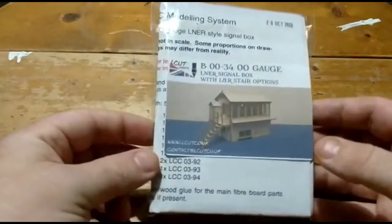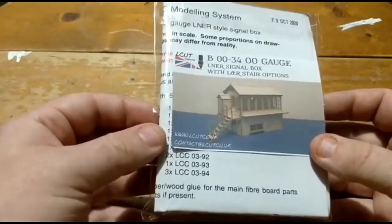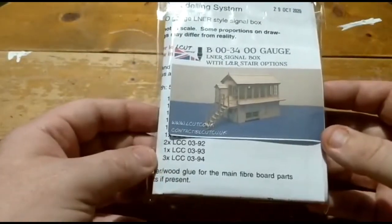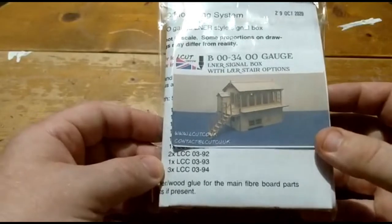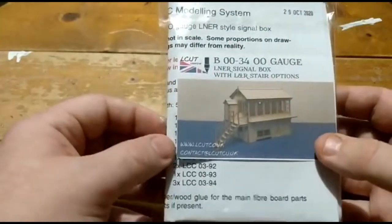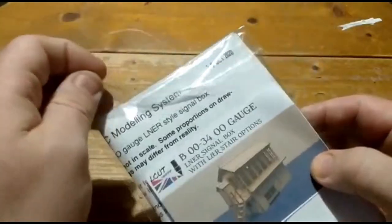So let's have a look at this. As it says on the bottom here, it's with glue for the main fibreboard parts. It's all laser cut. We'll have a look and see what is in the packet.